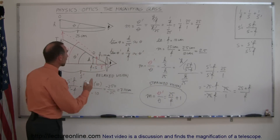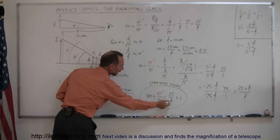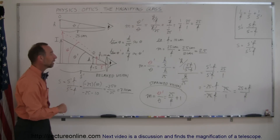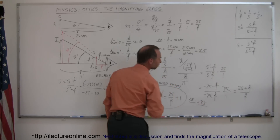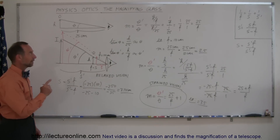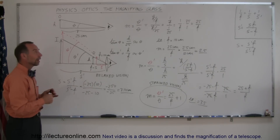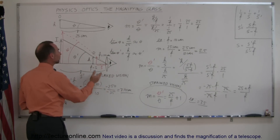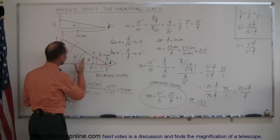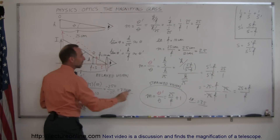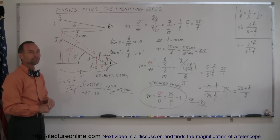Strained vision means you move the object in closer so the image forms 25 centimeters away, giving a bigger magnification angle. For our example, the magnification would be 2.5 plus 1, equaling 3.5 for a lens with a focal length of 10 centimeters. To summarize: if you look with relaxed vision by placing the object close to the focal point, the magnification is 25 over f. If you bring the object in a little bit closer so the image comes in at 25 centimeters, the magnification will be 25 over f plus 1. That's the only thing you need to remember to find the magnification using a magnifying glass.